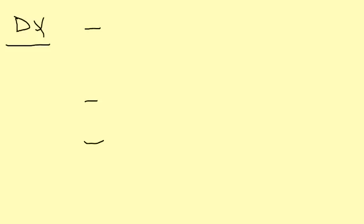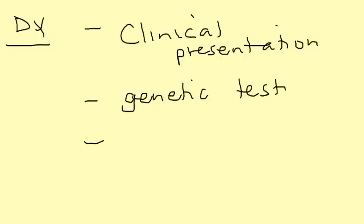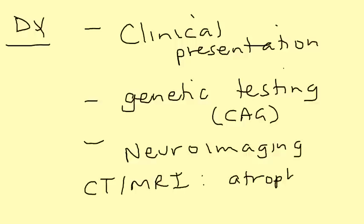So how do you diagnose it? The diagnosis of Huntington's involves three things. The first is the clinical presentation — evaluation of their symptoms and abnormal movements. The second is genetic testing, specifically the CAG repeat DNA sequence. The third is neuroimaging: whether it's a CT or MRI, it will show atrophy in the caudate nucleus of the brain.